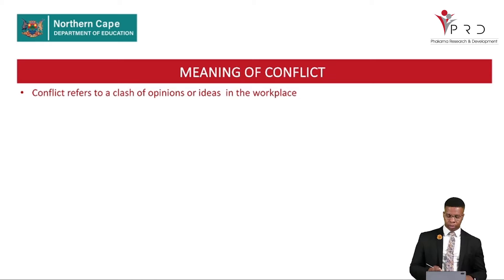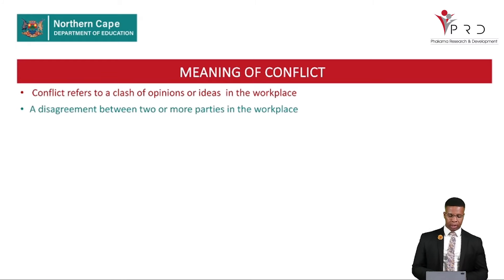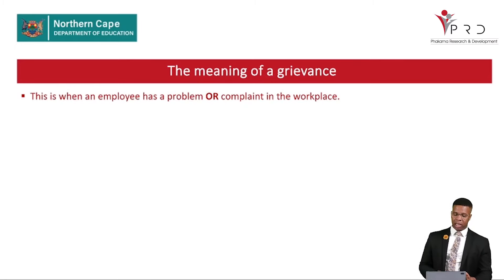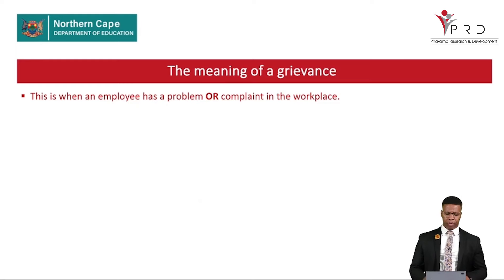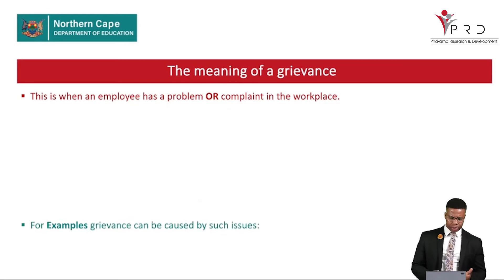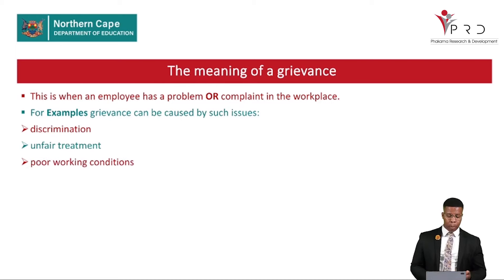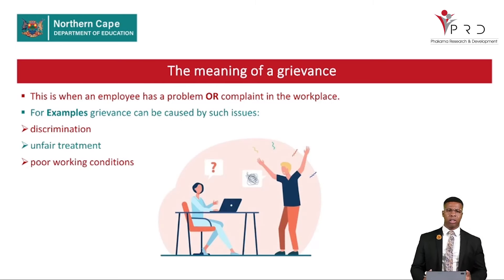Now we look at conflict. Conflict refers to a clash of opinions or ideas in the workplace — it is a disagreement between two or more parties. We also have the term grievance: this is when an employee has a problem or a complaint in the workplace. Unlike conflict, which is a clash between two or more parties, grievance is an individual complaint — for example caused by discrimination, unfair treatment, or poor working conditions.